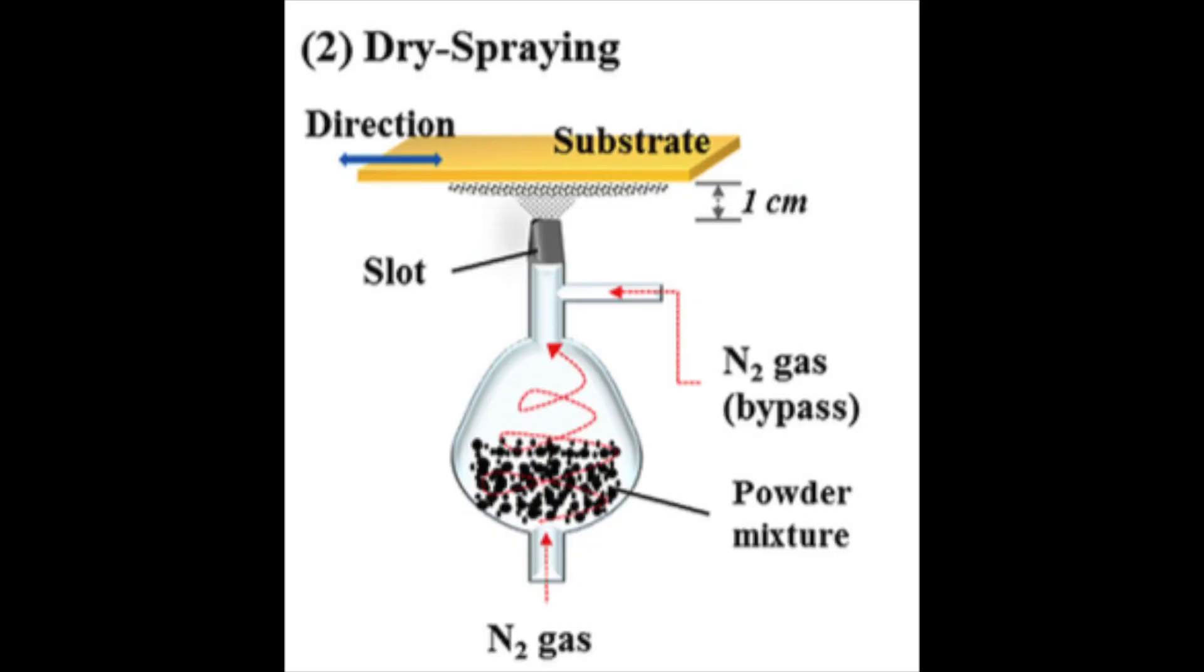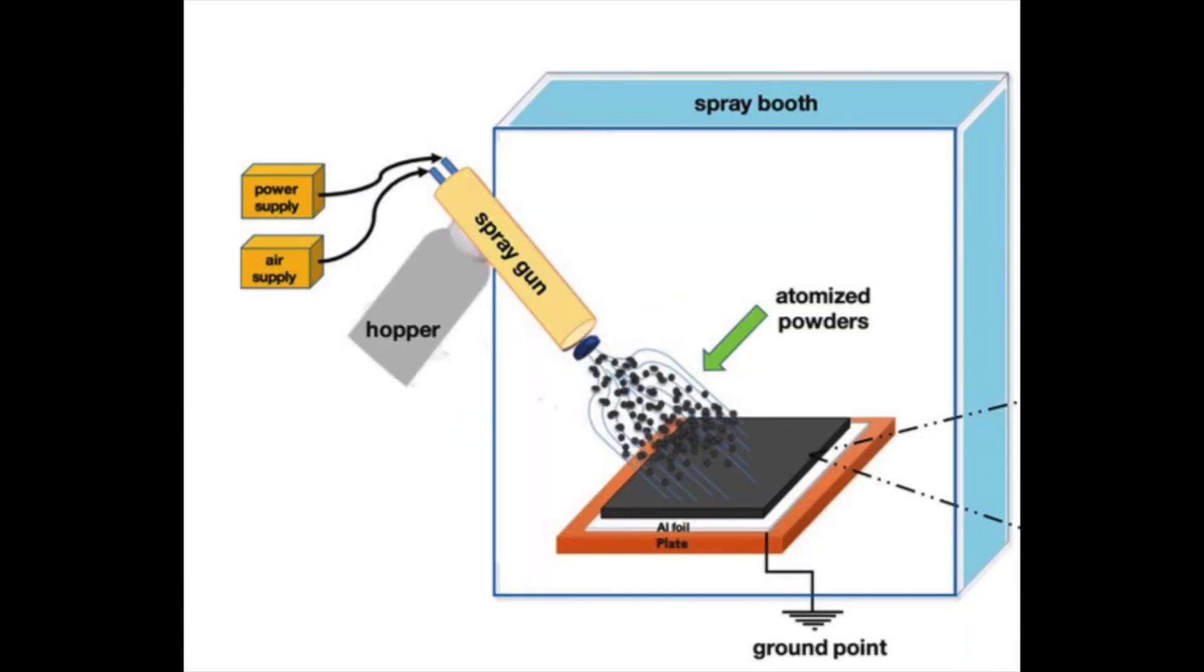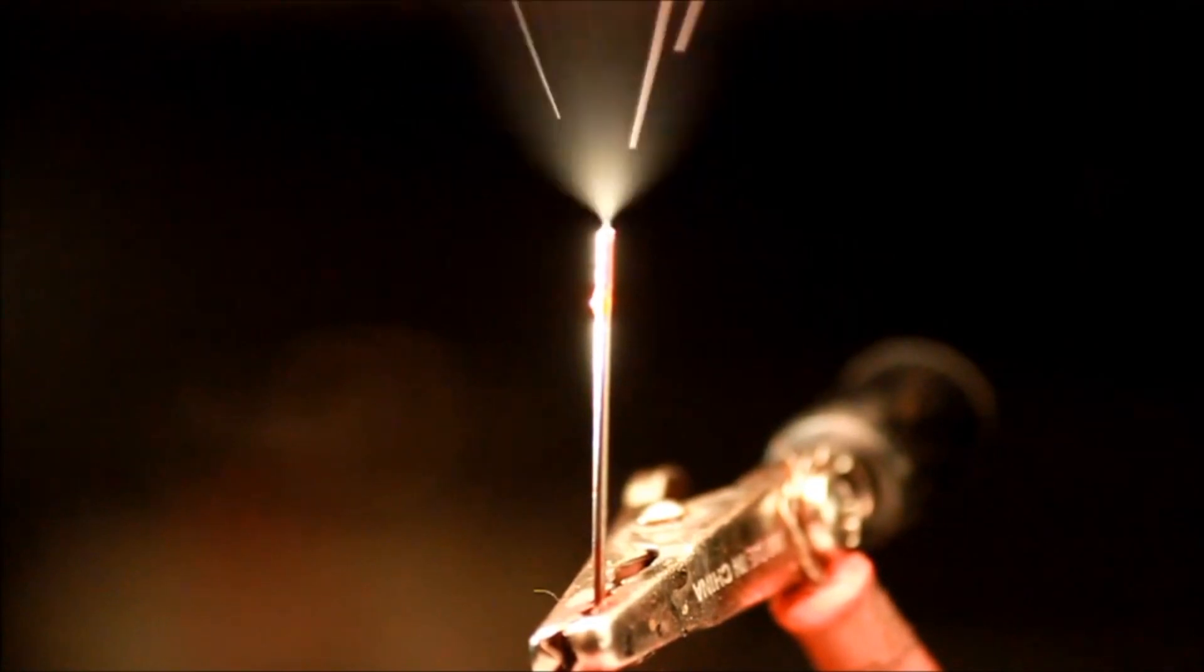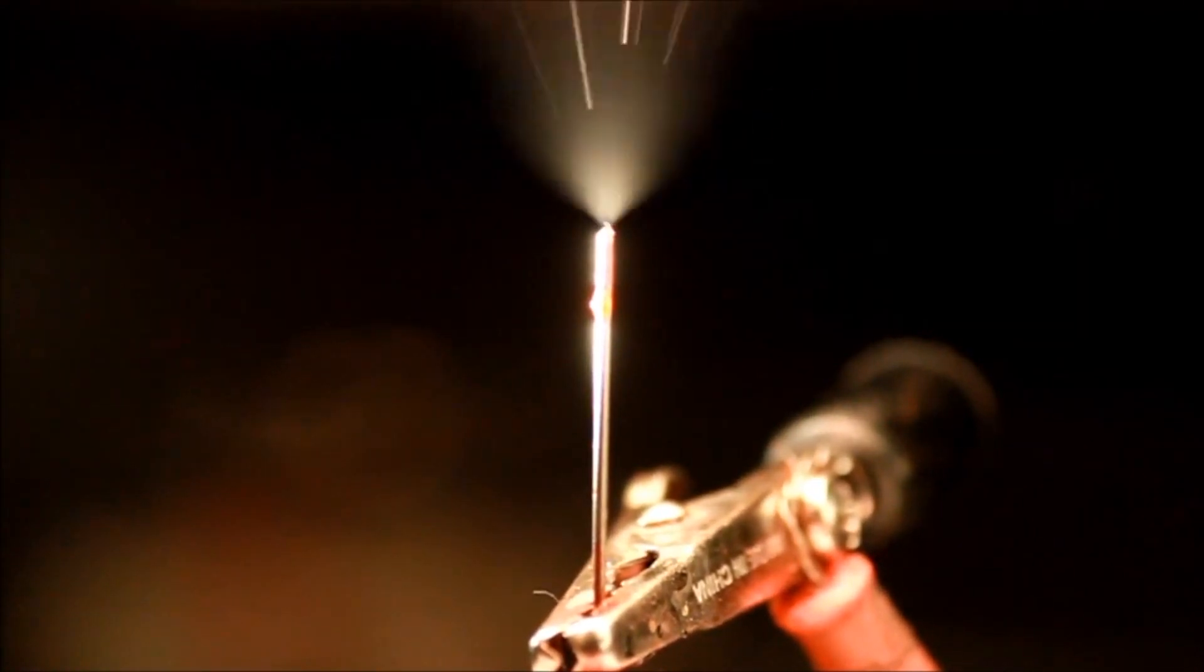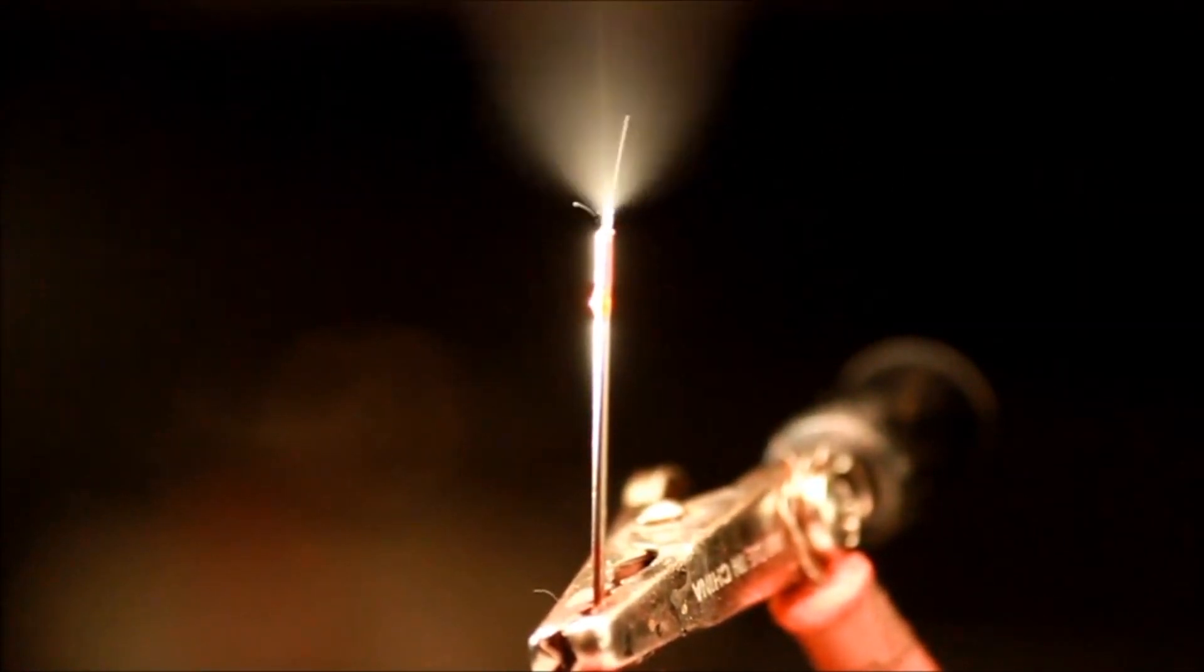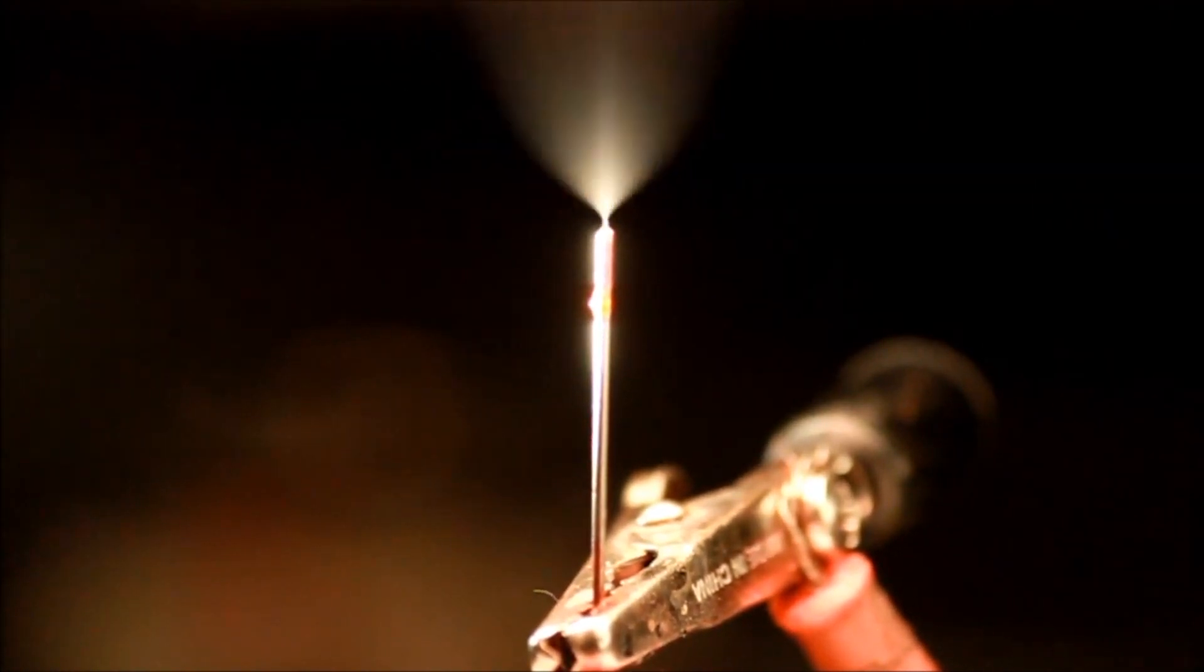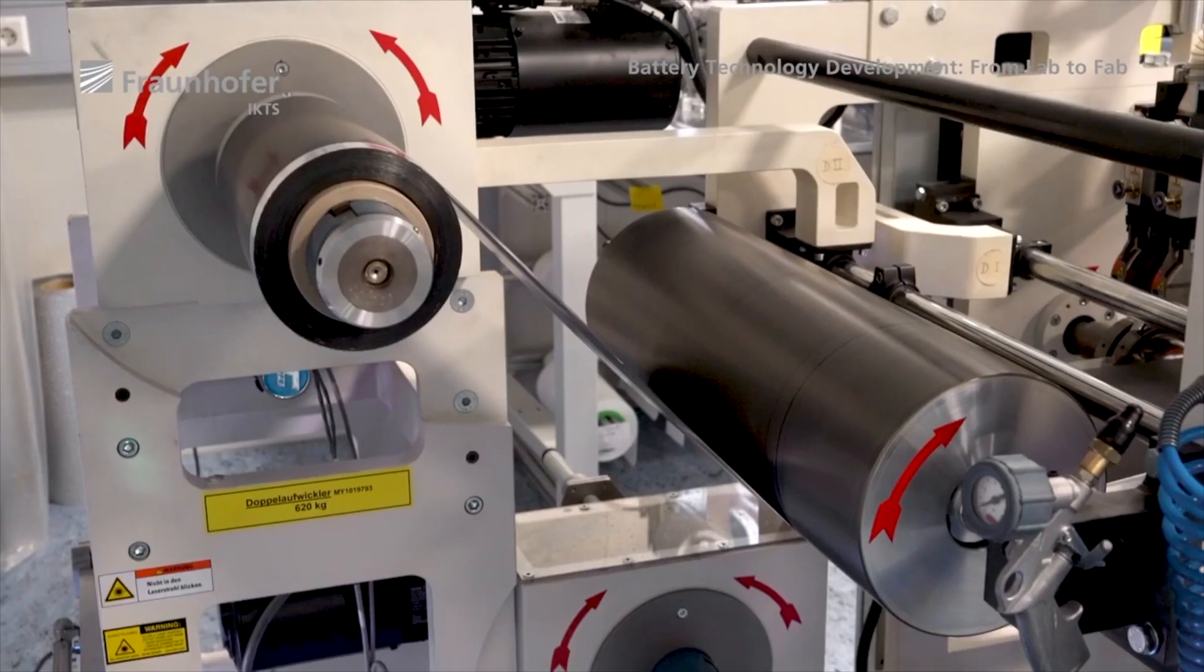Then this dry mix is either dry sprayed onto the current collector or done using an electrostatic dry powder coating process. The electrostatic spray method works by positively charging the material particles as they leave a spray gun and applying a ground or opposite polarity to the current collector for an electromagnetic attraction to occur.